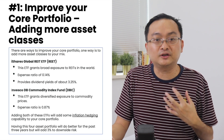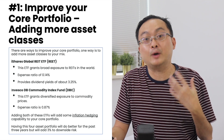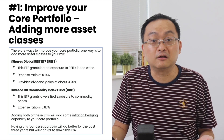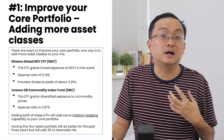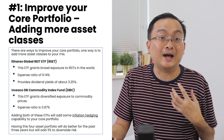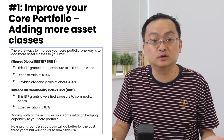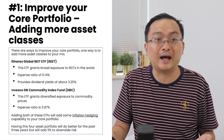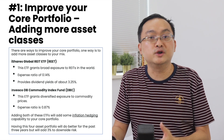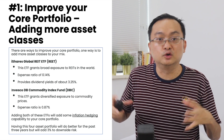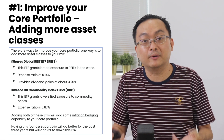The first way to improve your core portfolio is very simply to add more asset classes. There are more ways to improve your portfolio. First of all, you want to add real estate to the portfolio. One way of doing it is to add the iShares Global REIT ETF, which actually allows you to put in some exposure to real estate.